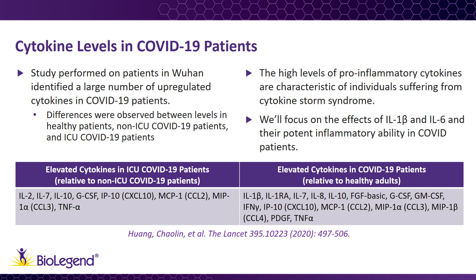They found elevated levels of several cytokines listed in the chart you see here, when compared with healthy adults. Additionally, patients in the ICU had higher levels of a subset of cytokines compared with non-ICU patients. IL-2, which is elevated in ICU patients, was not found in non-ICU COVID patients. The study's authors noted that these high levels of pro-inflammatory cytokines are hallmarks of a cytokine storm, and remarked that those patients requiring ICU treatment were the ones expressing higher levels of several of these cytokines, suggesting that it is likely correlated to disease severity in COVID-19.